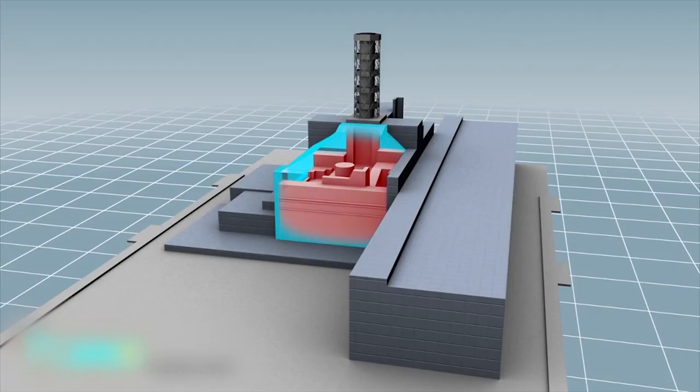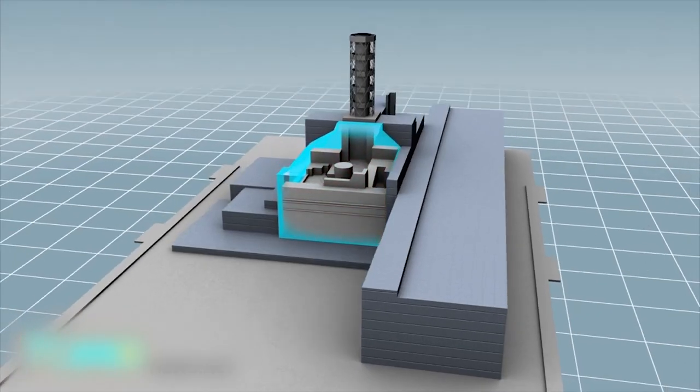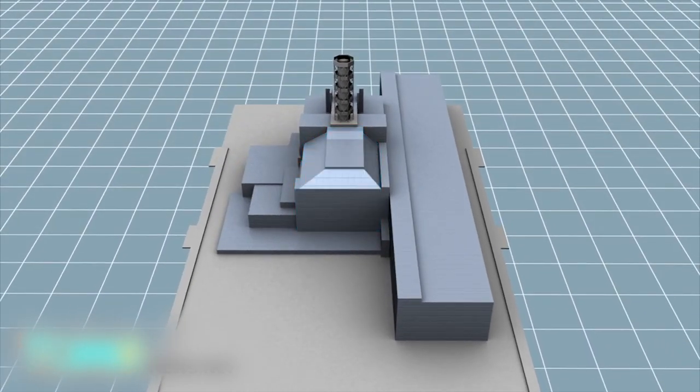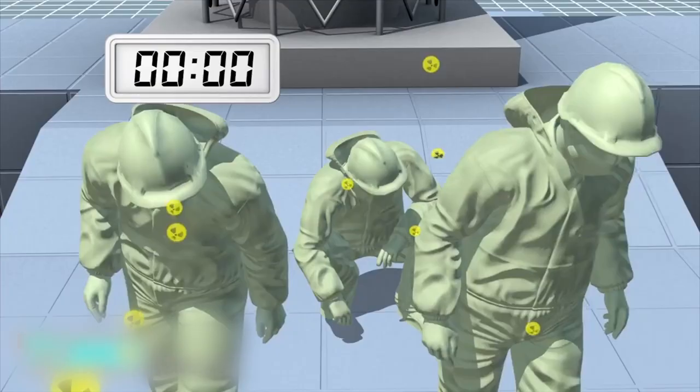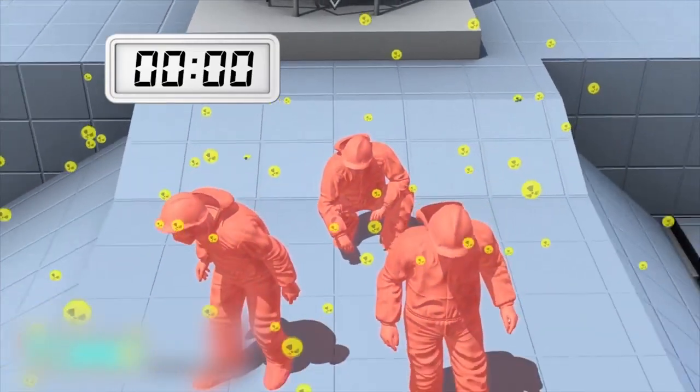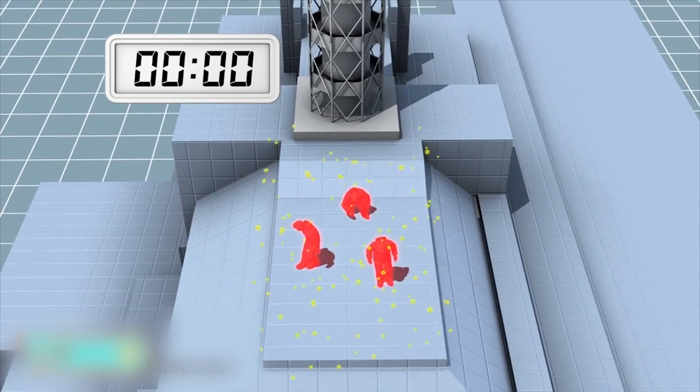Months after the Chernobyl explosion in 1986, a concrete and steel sarcophagus was built to seal off the damaged reactor number 4. Its roof is one of the most radioactive spots at Chernobyl. Workers would exceed their annual radiation limit after 12 minutes on the roof. The sarcophagus is now in danger of collapsing.